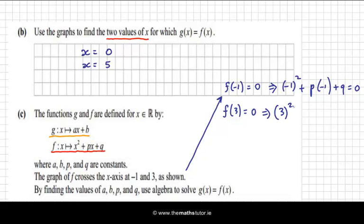When we substitute 3 in for x, we also get 0 as our output. So we have two simultaneous equations. If we tidy up those equations, let's call this equation A and this equation B. Equation A becomes 1 - p + q = 0. Equation B becomes 9 + 3p + q = 0.